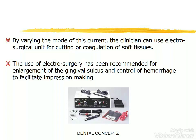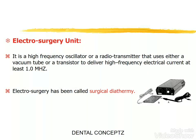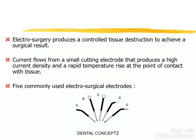By varying the mode of the current, the clinician can use the electrosurgical unit for cutting or coagulation of soft tissues. The use of electrosurgery has been recommended for enlargement of the gingival sulcus and control of hemorrhage to facilitate impression making. The electrosurgical unit is a high frequency oscillator or radio transmitter that delivers high frequency electrical current of at least one megahertz, and has been called surgical diathermy. The current flows from a small cutting electrode producing high current density and rapid temperature rise at the point of contact. Five commonly used electrosurgical electrodes include the coagulating electrode, diamond loop, round loop, small straight, and small loop electrode.